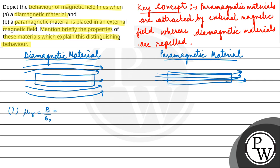The value of relative permeability for diamagnetic material is less than 1. But if we talk about paramagnetic material, this value is greater than 1.